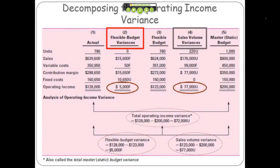This is our actual column, which we saw earlier. This is our master budget, which we saw earlier. And this is our flexible budget, which we just created. The difference between the flexible budget and the actual results is called a flexible budget variance, and the difference between the flexible budget and the master budget is your sales volume variance.